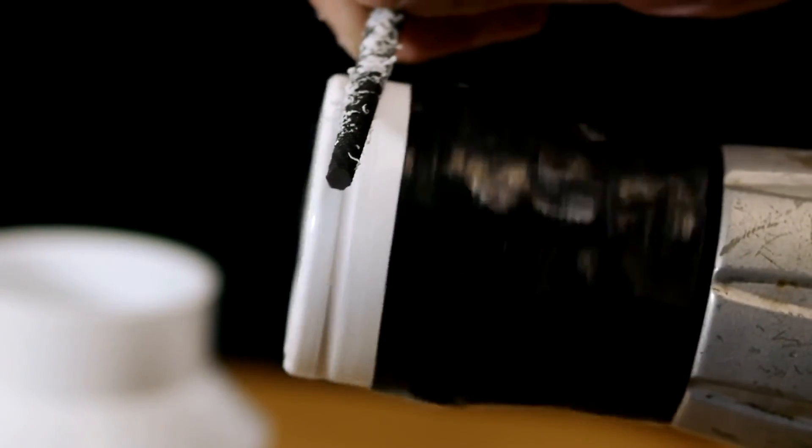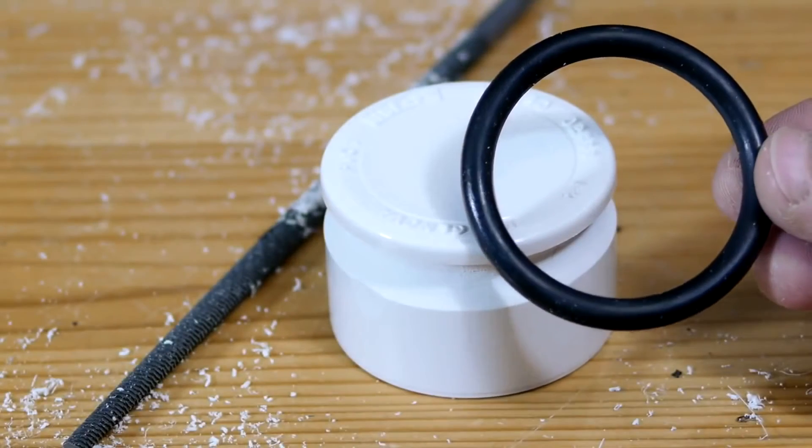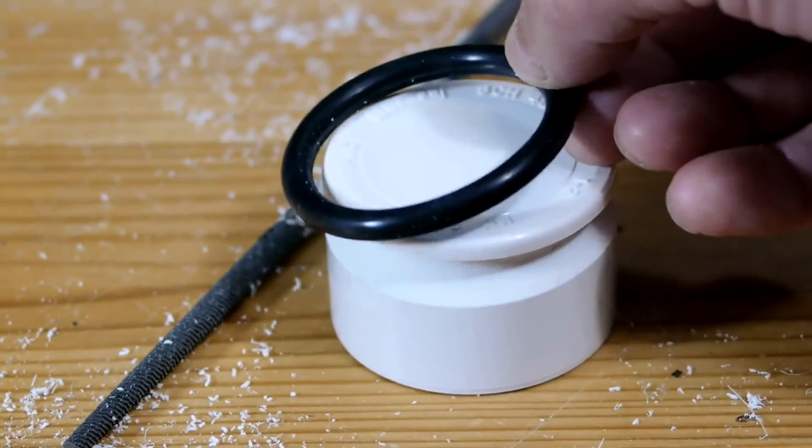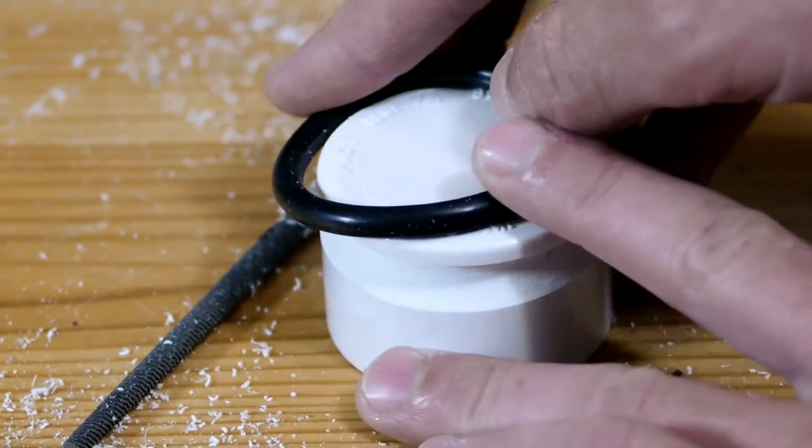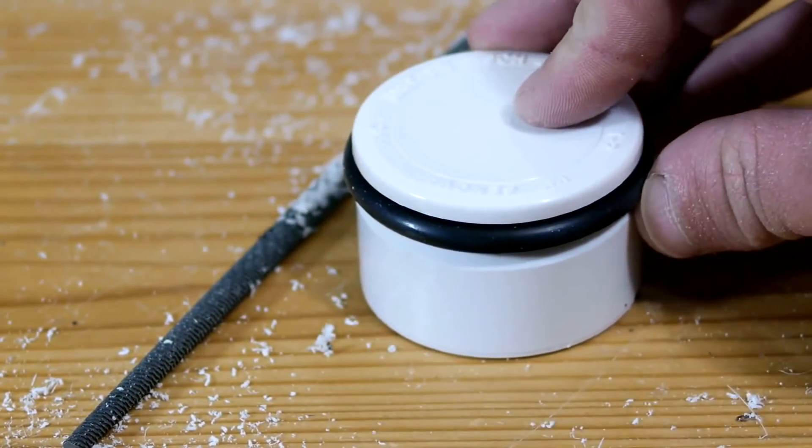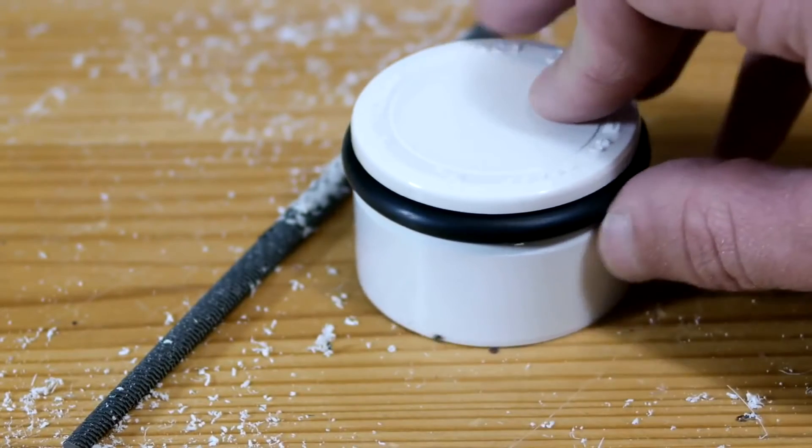The O-ring I am using is quite thick, so it takes a good deal of time to grind a groove deep enough for it to sit in. A narrower ring could possibly be used and would require less time, but thin rings are less durable and may need to be replaced more frequently.